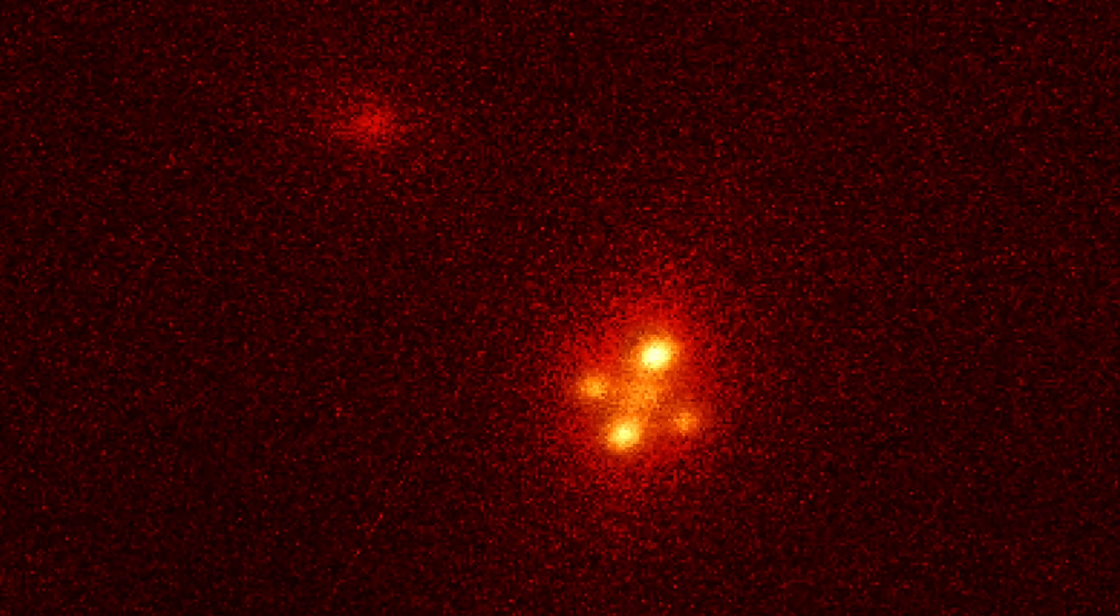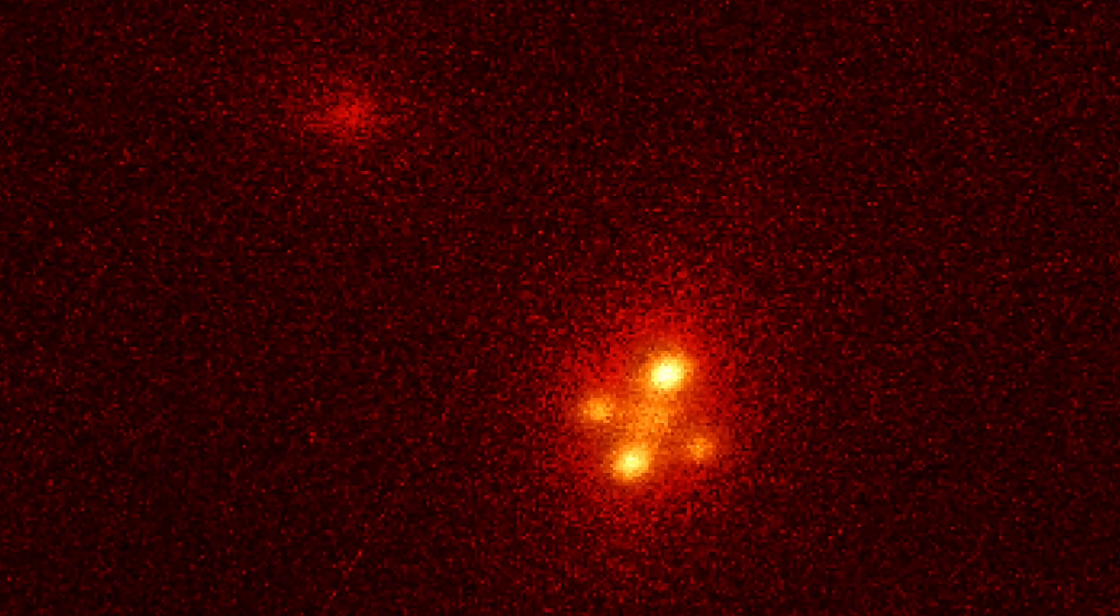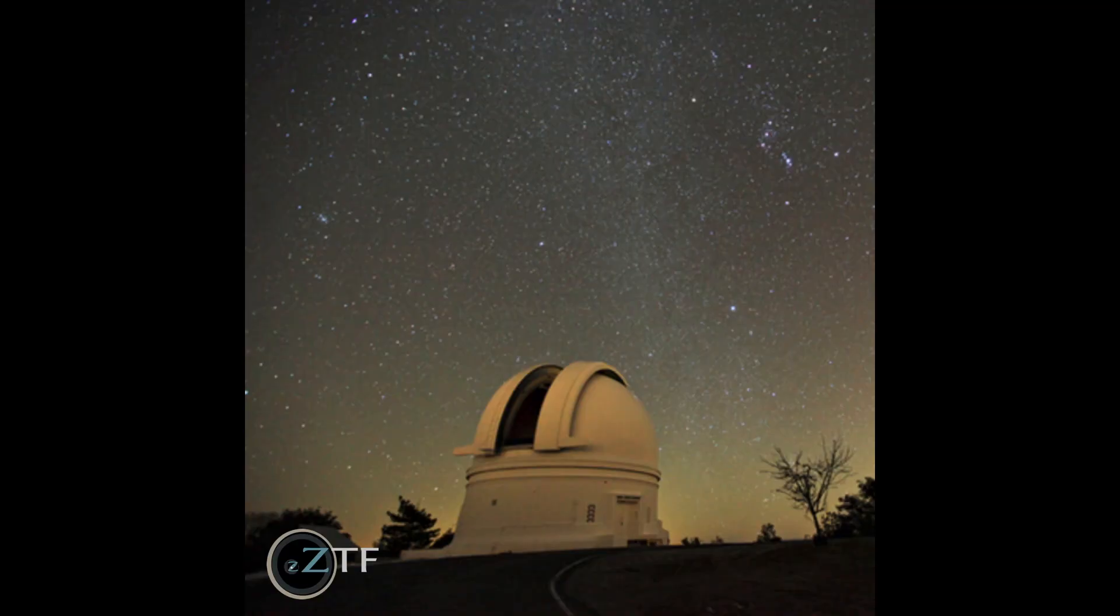This is the story of how we discovered one of the smallest and rarest objects in the night sky, using the telescope with the largest field of view. The telescope in question is the Zwicky Transient Facility. Its purpose? To scan the sky and search for newly appearing light sources.